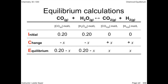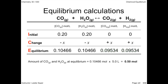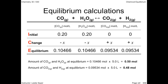So the concentrations of the reactants are 0.20 minus 0.09534, and the concentrations of the products are just 0.09534 moles per liter. Finally, to express the answer in amounts — that is, moles — we use the volume of the reaction vessel. The amount of reactants at equilibrium to the correct number of significant digits is 0.5 moles. The equilibrium amounts of the products is 0.48 moles. Not a lot of difference between reactants and products, but we expected that by virtue of the equilibrium constant being so close to 1.